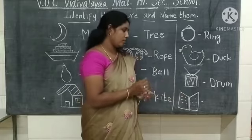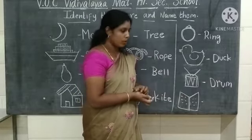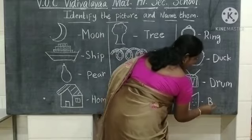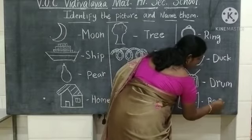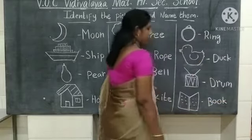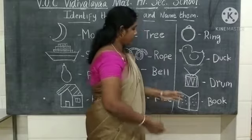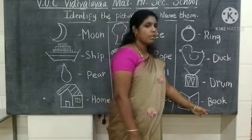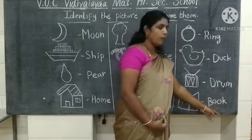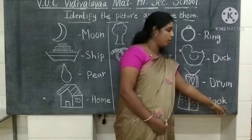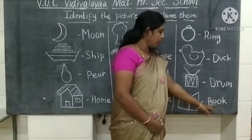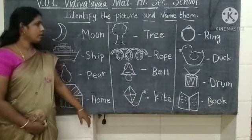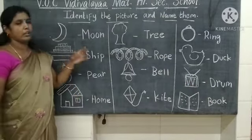What picture is this? This is a book. What is the spelling of book? B-O-O-K — book. What picture is this? This is a book. What is the spelling of book? B-O-O-K — book.